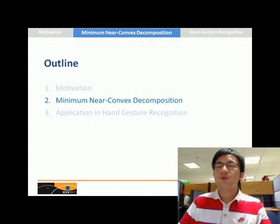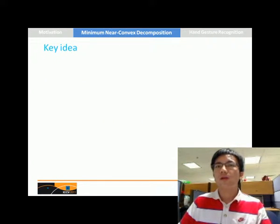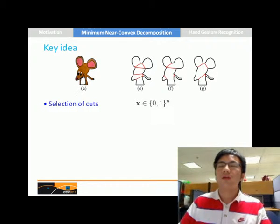Now I will introduce our work, Minimum Near-Convex Decomposition. The key idea of our work is the selection of cuts, as shown in these three figures on the right. Different selection of cuts can lead to different decomposition results. So we assign a binary vector x to indicate whether a cut is selected or not.